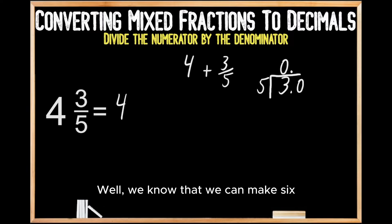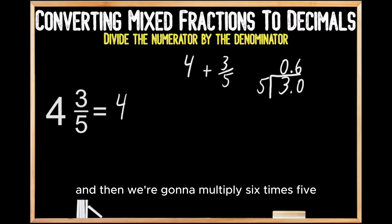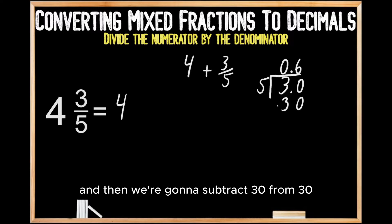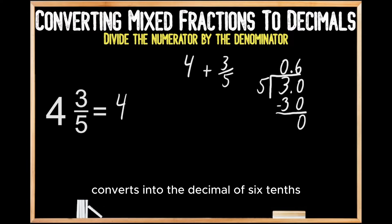We know that we can make 6 equal groups of 5 out of 30, so we're going to write our 6 up top, and then we're going to multiply 6 times 5. We know that gives us 30, so we're going to write our 30 and then subtract 30 from 30, which is going to leave us with 0. So the fraction of 3 fifths converts into the decimal of 6 tenths.